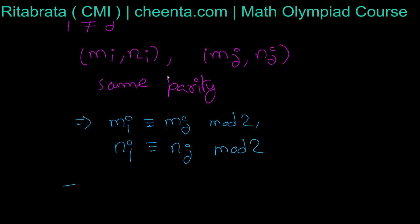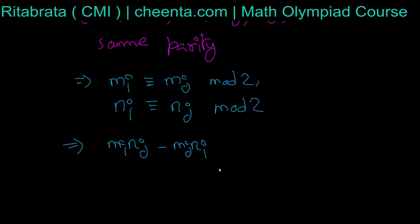Now again, what can you say about the expression mᵢnⱼ - mⱼnᵢ? Since mᵢ is congruent to mⱼ and nᵢ is congruent to nⱼ, this is congruent to... congruence is an equivalence relation so I can replace mᵢ by mⱼ and keep nⱼ.